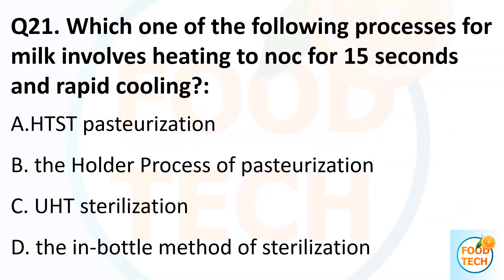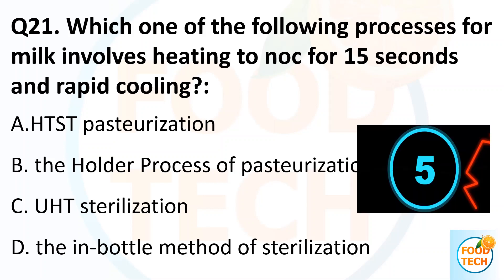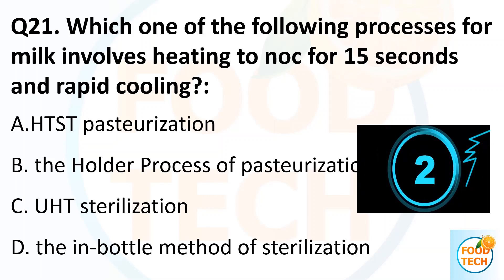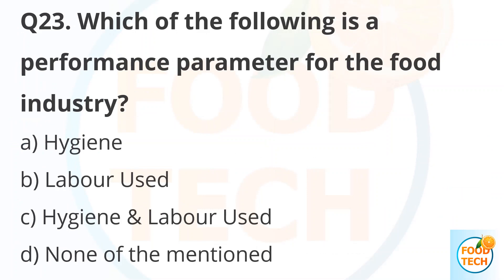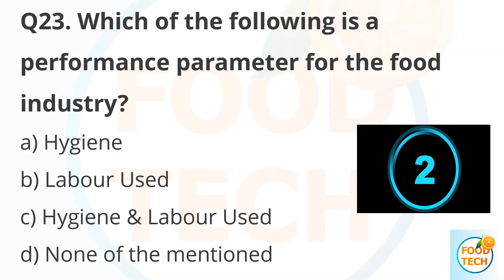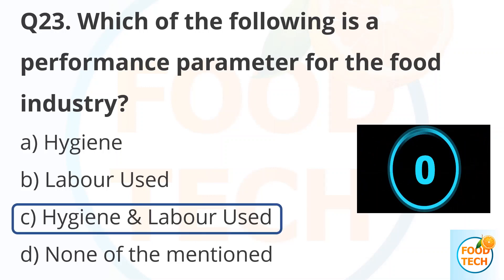Question 21. Which one of the following processes for milk involves heating to a certain temperature for 15 seconds and rapid cooling? Answer A. HTST pasteurization. Question 23. Which of the following is a performance parameter for the food industry? A. Hygiene. B. Labor use. C. Hygiene and labor use. D. None of the mentioned. Answer C. Hygiene and labor use.